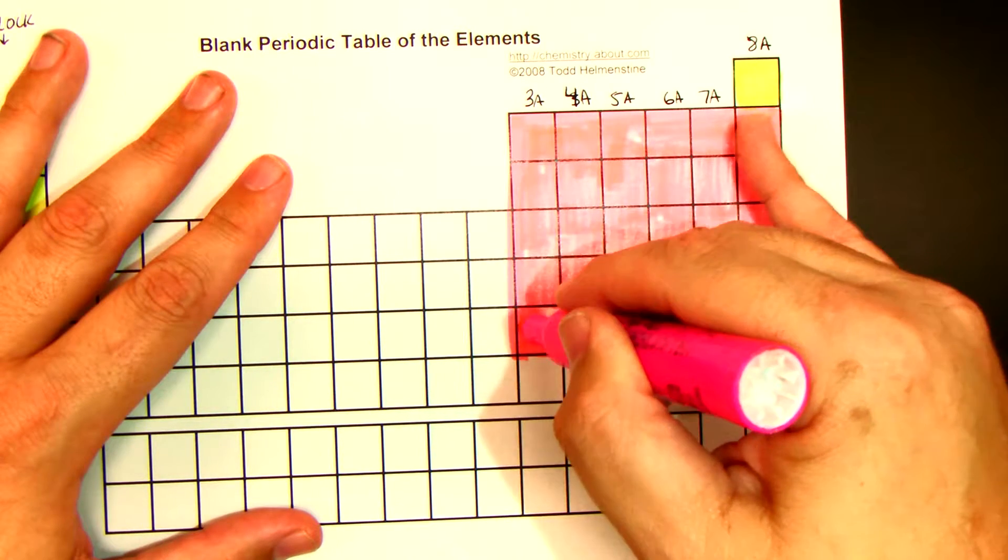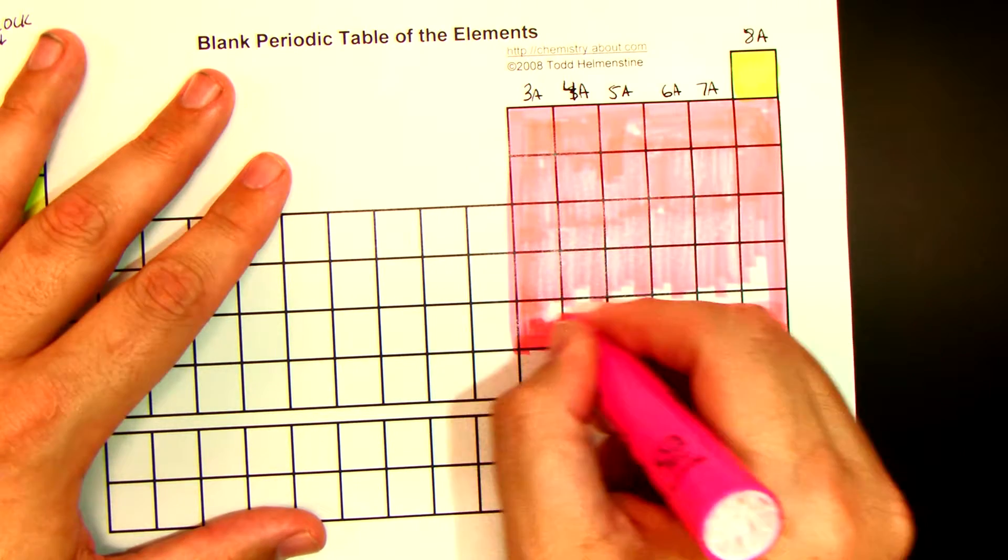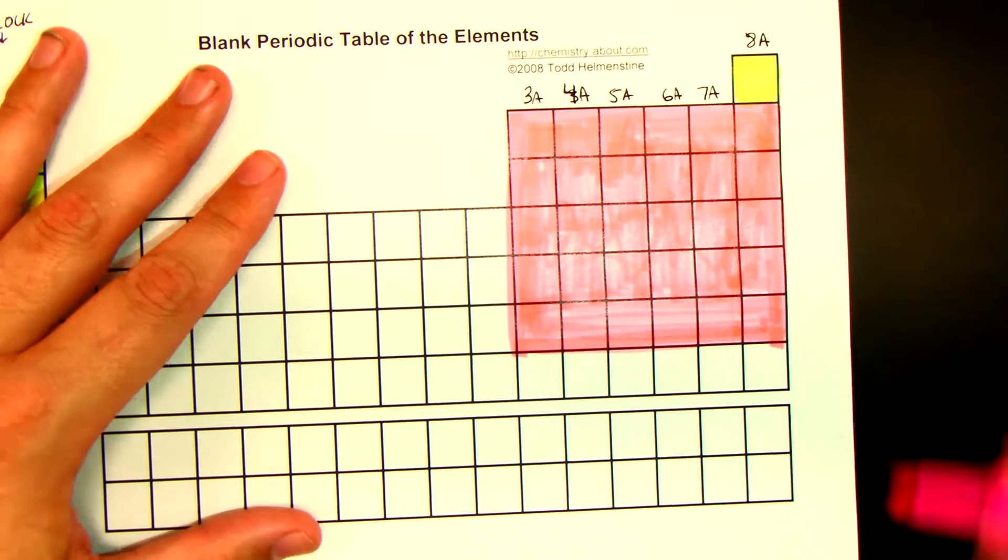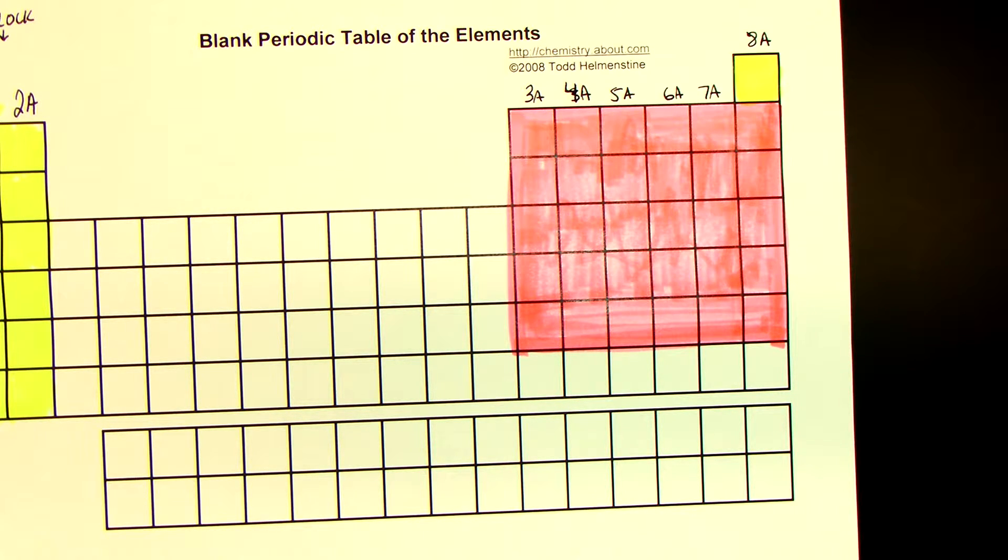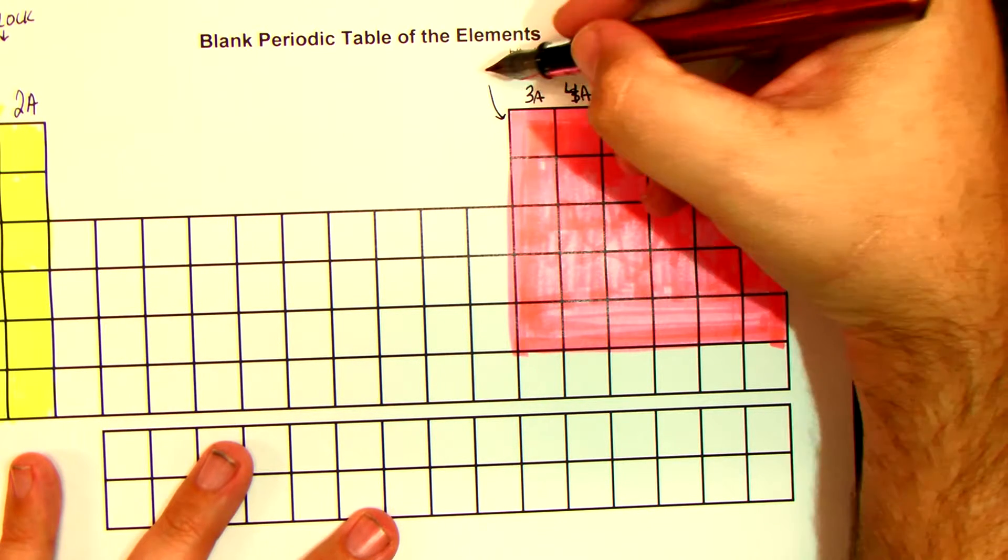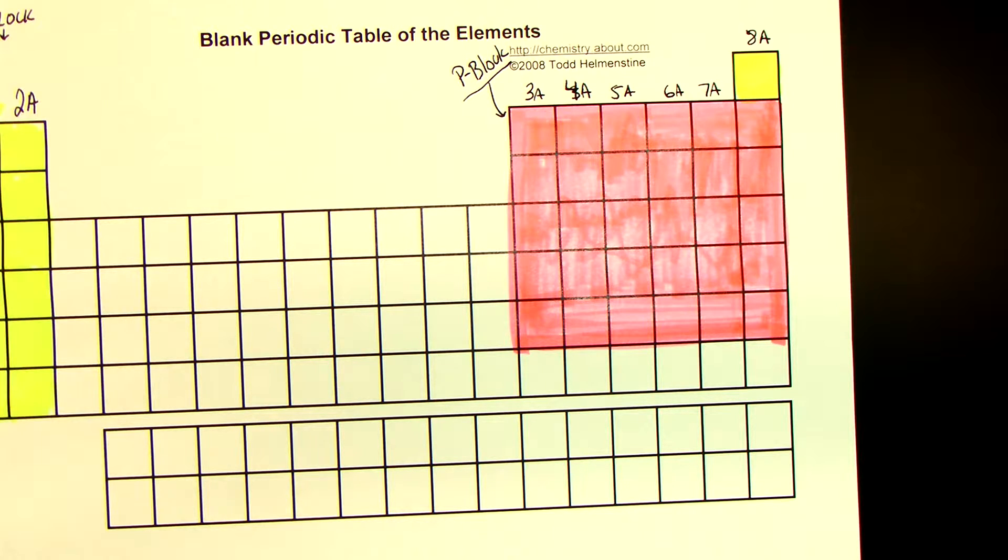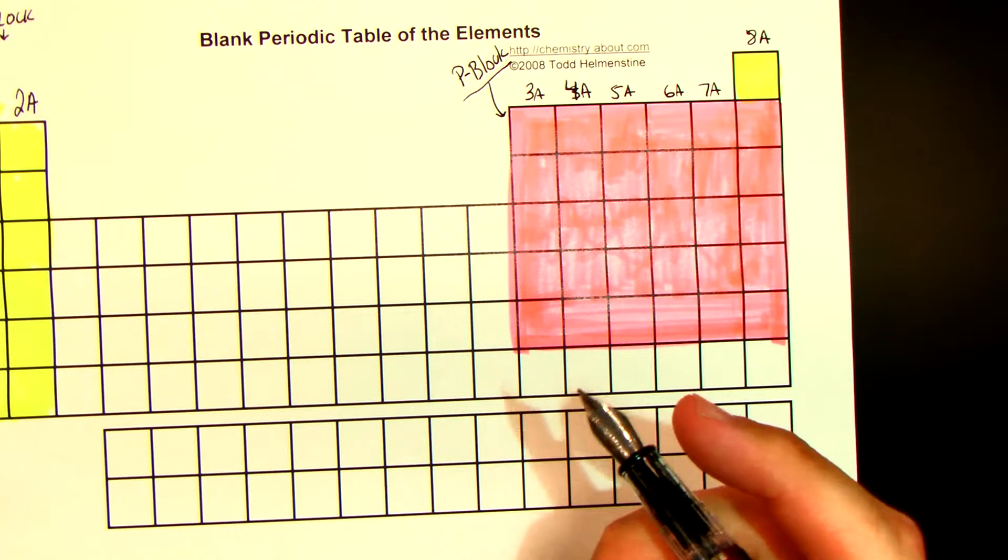My highlighters are starting to scream at me that I've been using them too much. But we're going to do the best we can. That's all we can do. We can only do the best we can. So if you want to, you can do a little arrow here and say that's your P block. Remember, this is for you, and this is for what you're going to use on a test. So you want this to be usable for you. And there are colored pencils in the back. There's a ton of them. There's a drawer full of them if you want to use those as well.